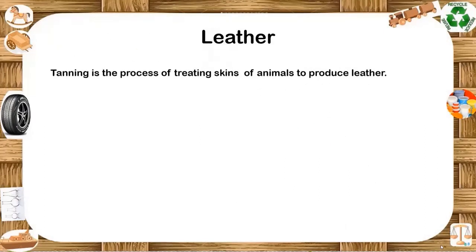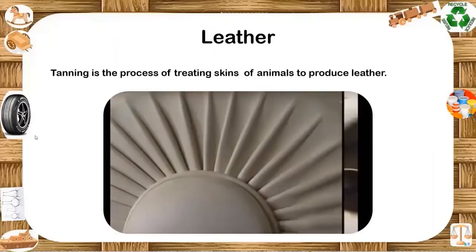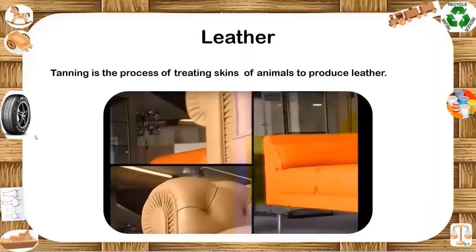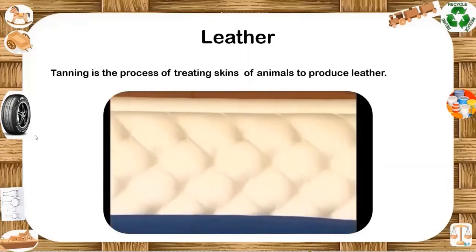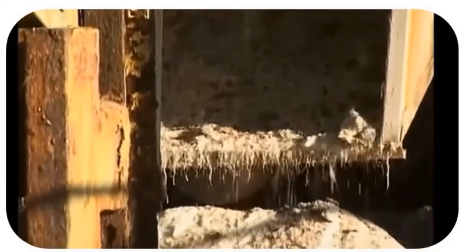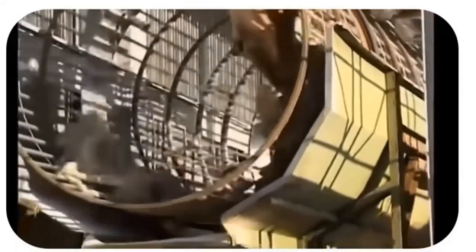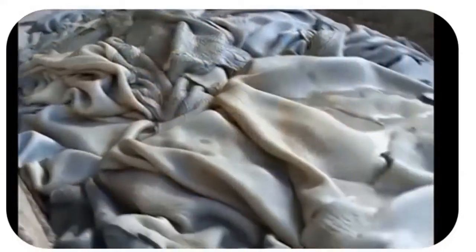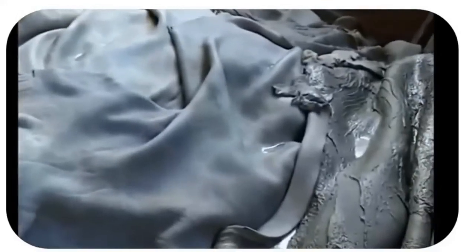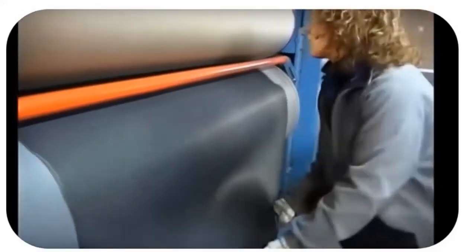Tanning is the process of treating skins of animals to produce leather. A tannery is the place where the skins are processed. Here, unwanted hairs from the skins are removed. The fleshing machine cuts away unwanted fleshy matter and regulates leather thickness. The leather passes on to the next stage called trimming, where workers cut away useless or unwanted material from the edge of raw skin to give it a better shape.